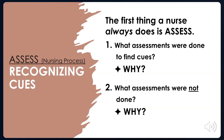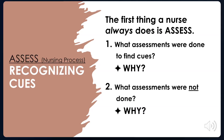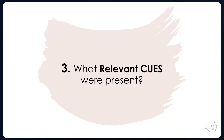First, always — and we rarely say always or never, but this is an actual truism — the nurse has to always assess, not just one thing but as much as we can. We talk about what assessments were done to find the cues, and why. Just as importantly, what assessments were not done and why — and is it okay that we didn't do those assessments? That leads us to the first big step of the clinical judgment model: what relevant cues were present.